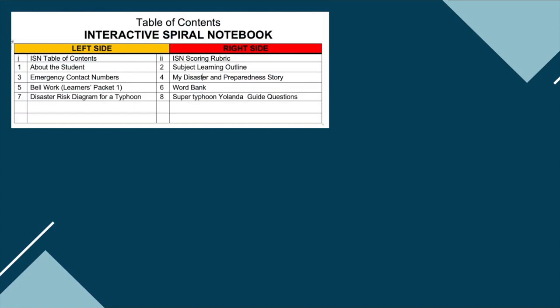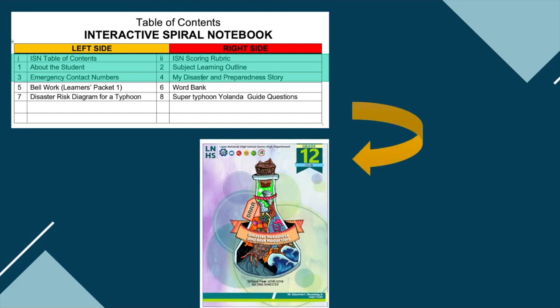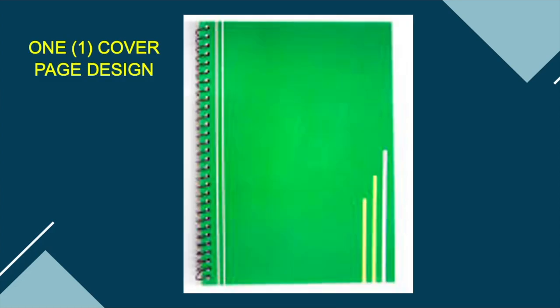Now I believe you have your table of contents. Today we're going to use this table of contents for making your ISN. We'll talk about the first few parts. This will require you to have your ISN or notebook. Let's start by looking for the cover. In my class, I usually tell my students to create one cover per class. This can be done by submitting entries for your cover — whoever is chosen, their design becomes the cover for the whole class. Of course, additional points will be given, and this cover can be printed or sent through soft copies.